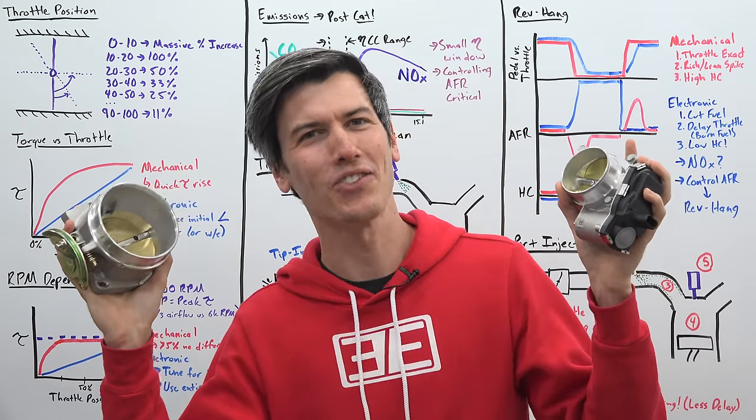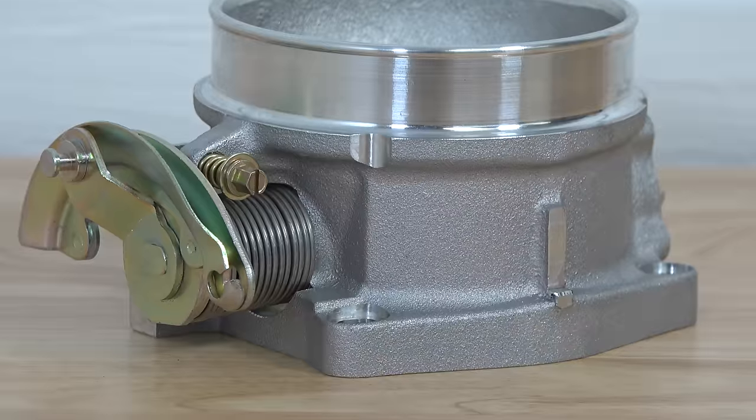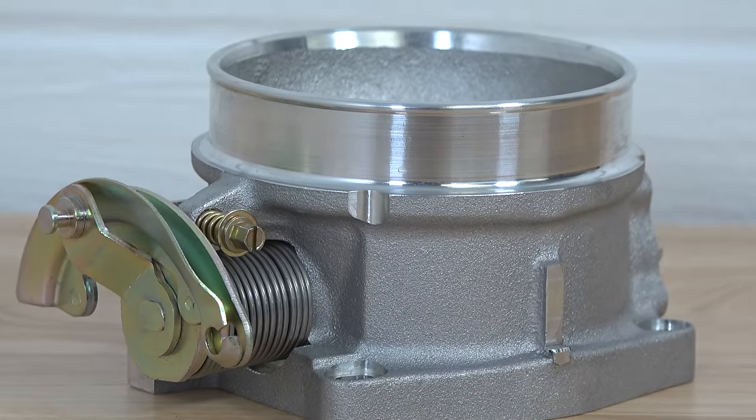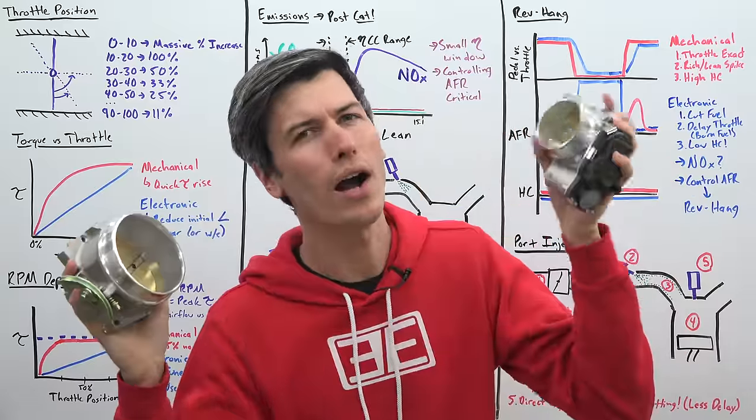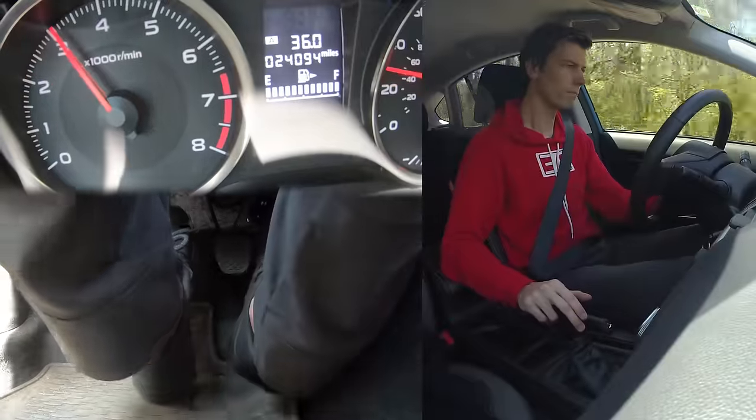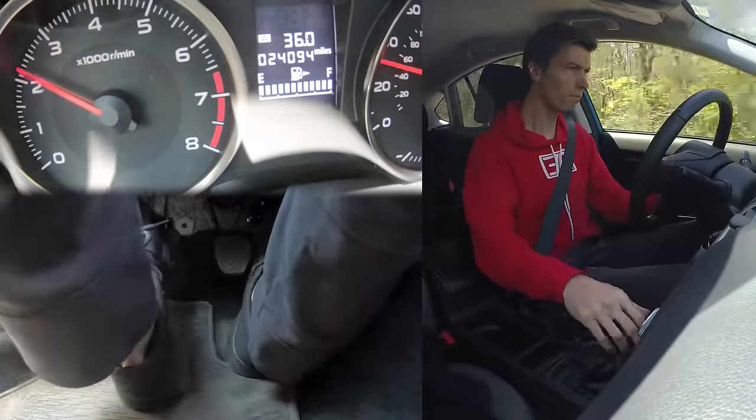Hello everyone and welcome. In this video sponsored by Advanced Auto Parts, we are looking at the differences between mechanical throttle bodies versus electronic throttle bodies. We're going to be discussing why electronic throttle bodies lead to a common problem with modern manual transmissions, rev hang.